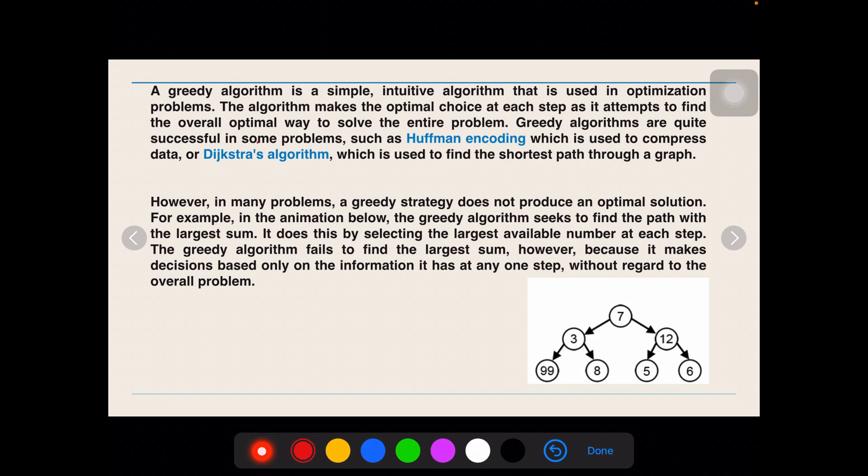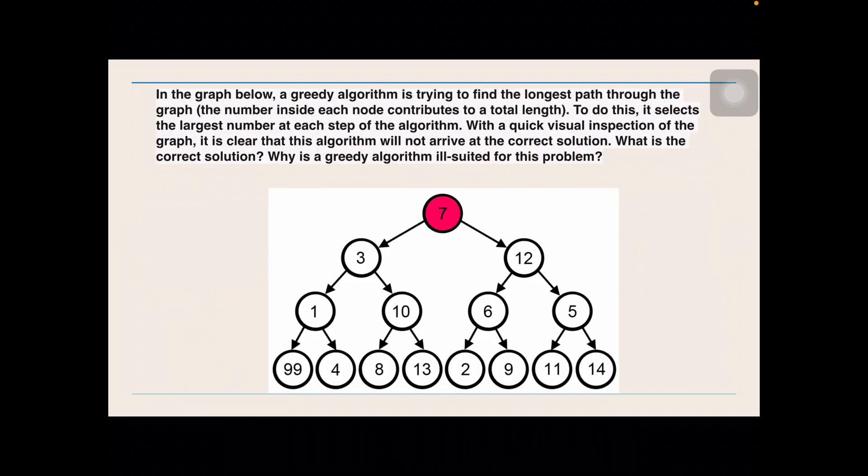We will learn about the dynamic programming. The algorithm makes the optimal choice at each step as it attempts to find the overall optimal way to solve the entire problem, like we saw right now and we will see another great problem up next. Greedy algorithms are quite successful in some programs like Huffman encoding and Dijkstra's algorithm. We will learn about Huffman encoding and Dijkstra's algorithm in a separate video in this particular series, which is used to find the shortest path. So, does this statement mean that greedy algorithms also fail in some problems? Yes, greedy algorithms fail in certain problems.